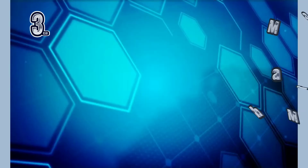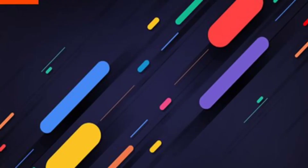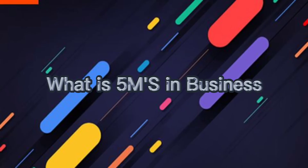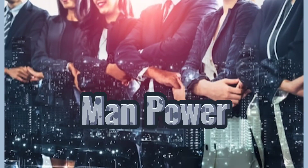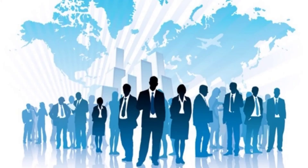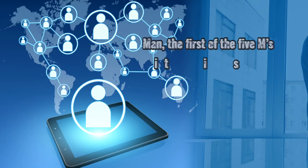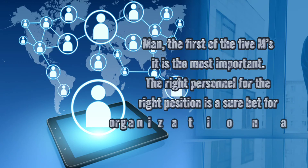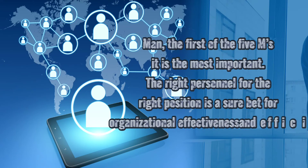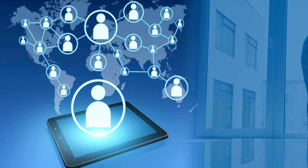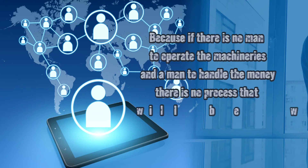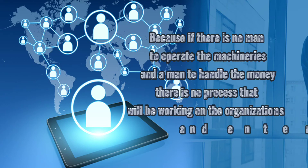The next topic is the 5 Ms in business. The first component is manpower, the most important component in business. Putting the right personnel in the right position is a sure bet for organizational effectiveness and efficiency, because if there is no one to operate the machinery and handle the money, no process will be working in the organization.